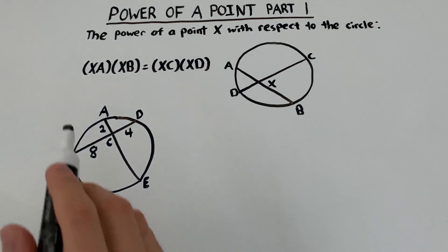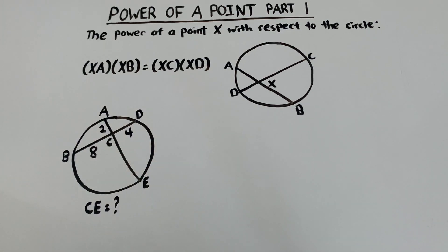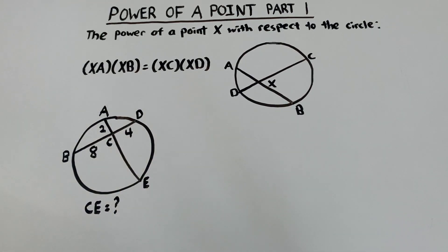So in this first problem over here we're given AC equals 2, BC equals 8, and CD equals 4. And using this information we need to find CE.